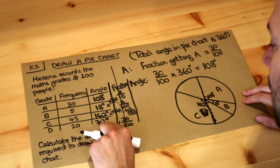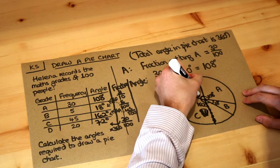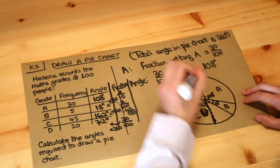And then finally we've got the D people, that's 72 degrees here. And that is your D slice there.